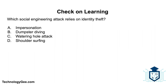Question two: Which social engineering attack relies on identity theft — impersonation, dumpster diving, watering hole attack, or shoulder surfing? The correct answer is impersonation. Dumpster diving and shoulder surfing could potentially tie into identity theft to some extent, but when taking these tests you have to select the best answer, and impersonation is the best answer here.